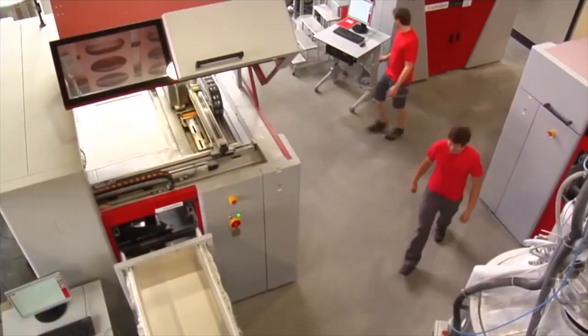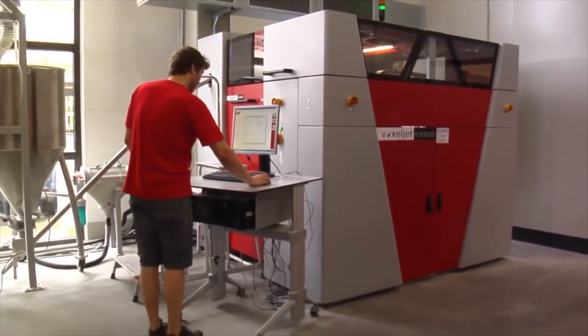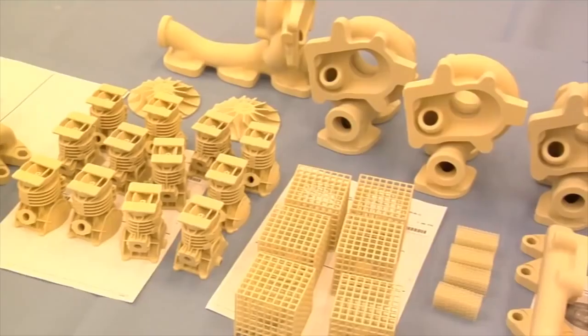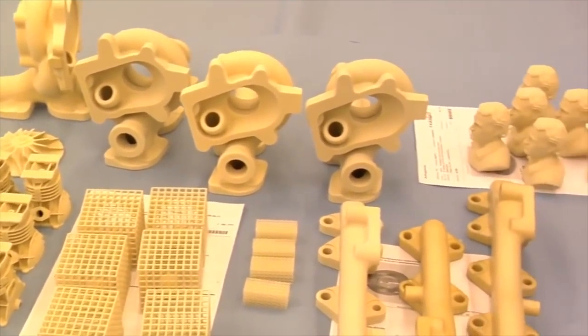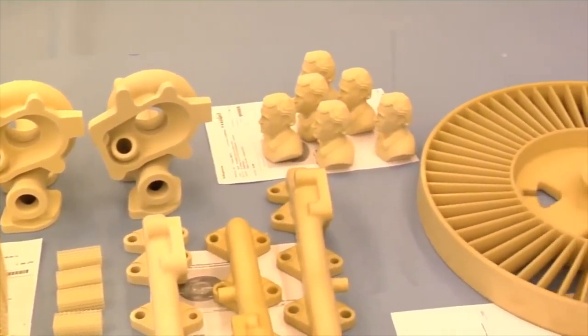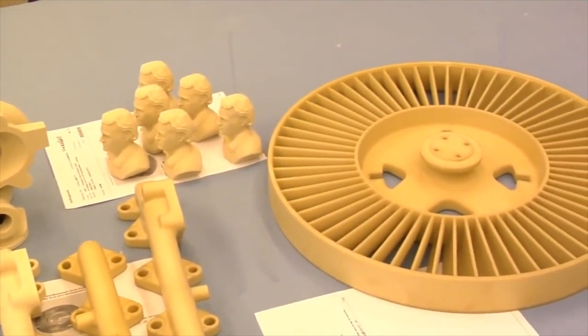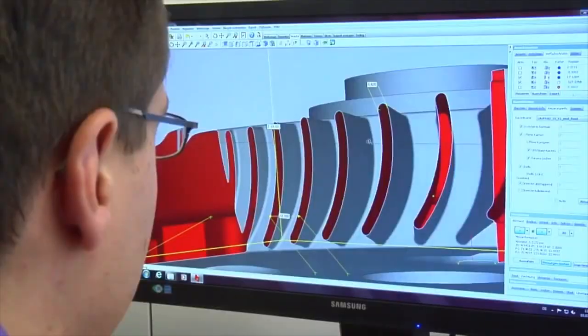Voxeljet can manufacture complex plastic parts using a 3D printing process. It consists of a powder-based process that can be used to create investment casting and illustrative models measuring up to 1060 by 600 by 500 millimeters. When your CAD data is received, it is checked and prepared for the process. Geometries can be changed at any time as this process does not use any tools.